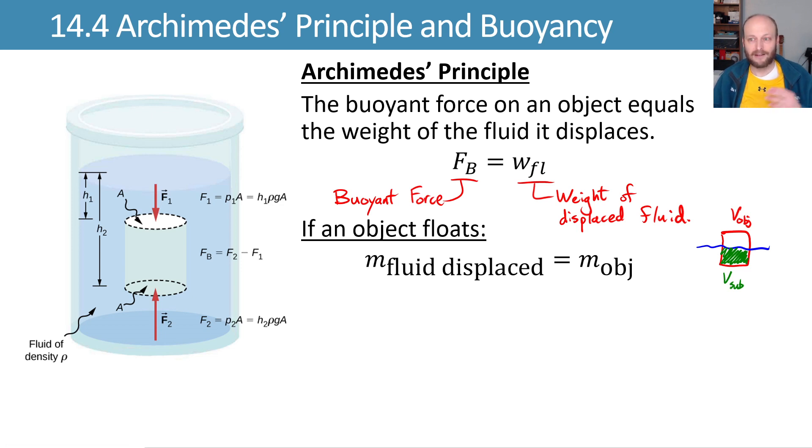We can do that by saying the fraction that's submerged is going to be the volume that's submerged divided by the volume of the object. The volume that's submerged is equal to the volume of the fluid that we have displaced. Since density is equal to mass over volume, we can then say that that ratio of volume of the fluid over volume of the object is going to equal the ratios of their masses over densities.